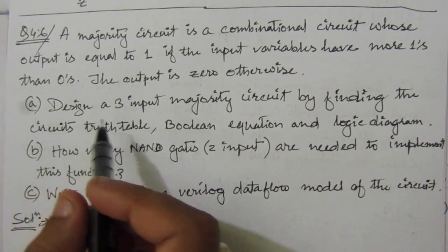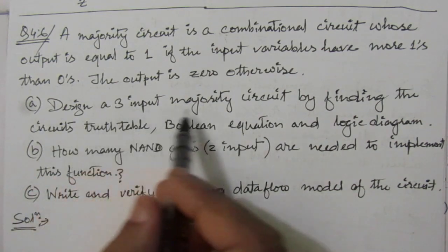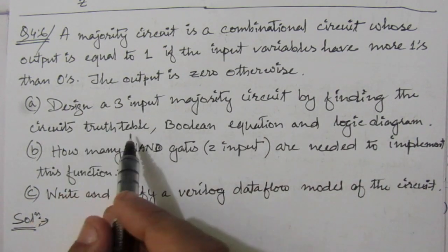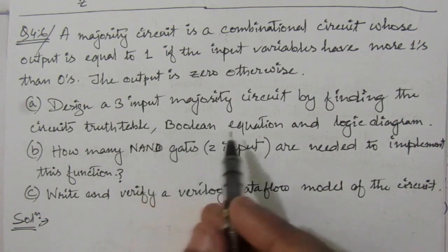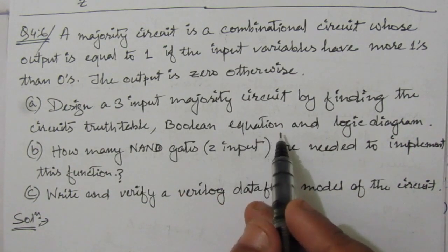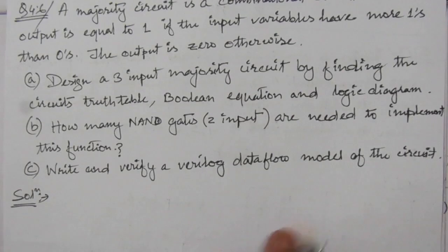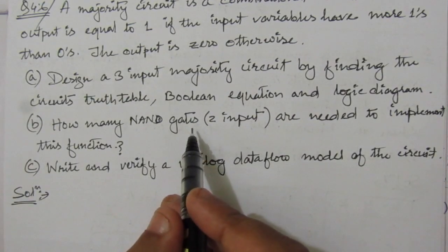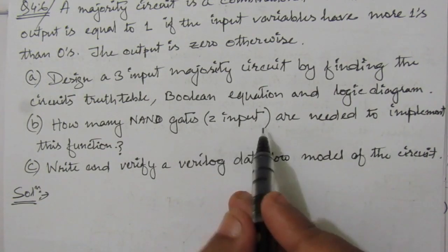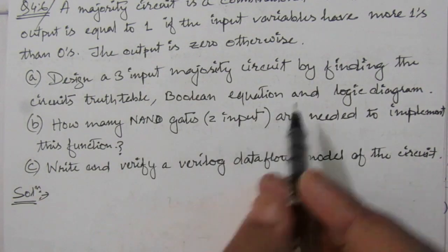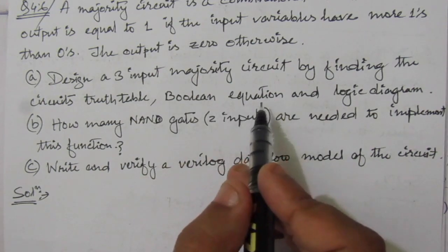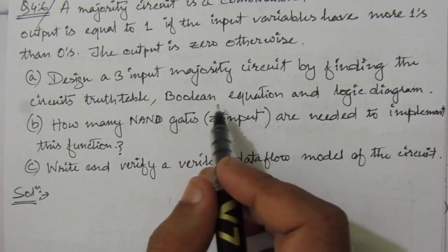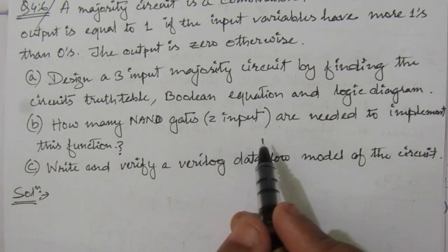We are given 3 conditions. The first condition is to design a 3-input majority circuit by finding the circuit's truth table, then finding the Boolean equation, and then drawing the logic diagram. In the second part, we have to find how many 2-input NAND gates are needed to implement this function — that means we have to represent the equation in terms of NAND.